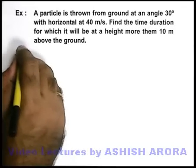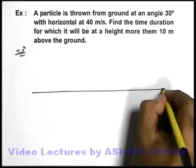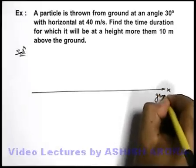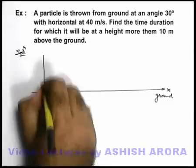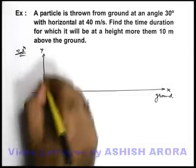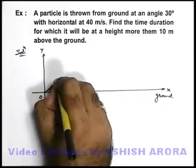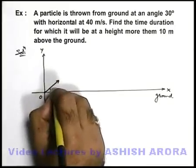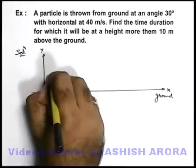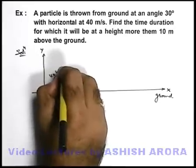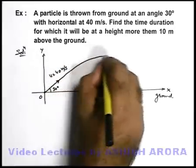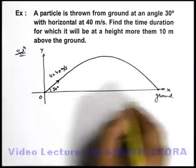If we first draw the physical situation, this is the ground on which we can consider the x direction, and this is the point of projection which we take as origin. We are given that a particle is thrown at an angle of 30 degree with the initial speed of 40 meters per second. It follows a projectile motion and finally hits the ground somewhere else.